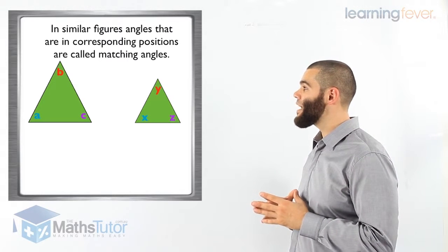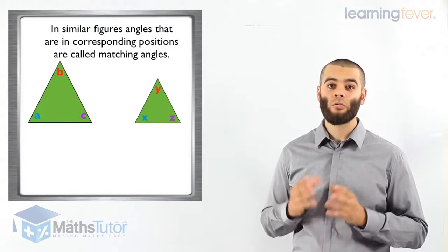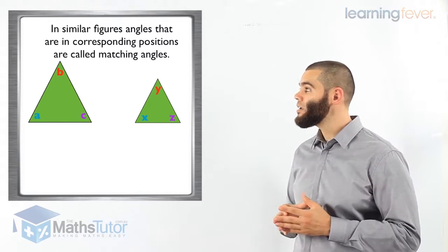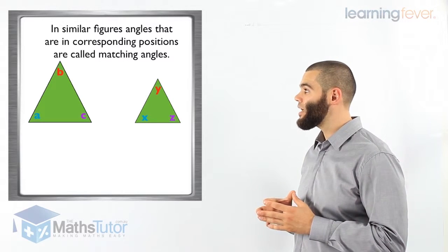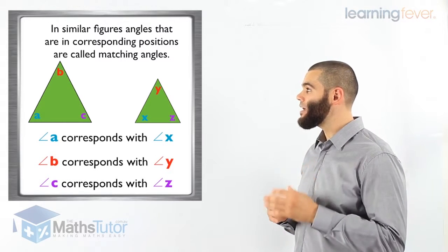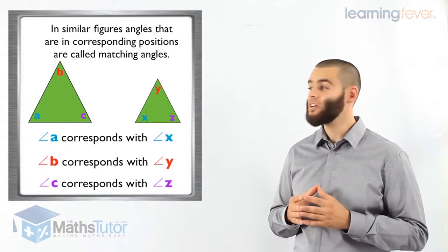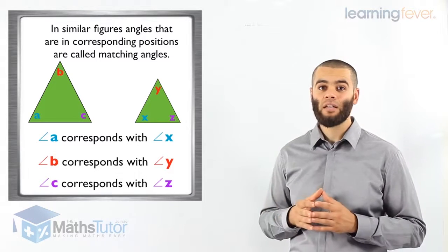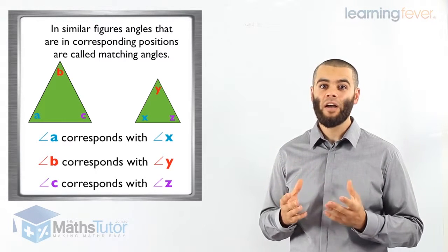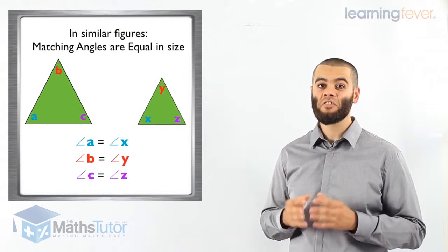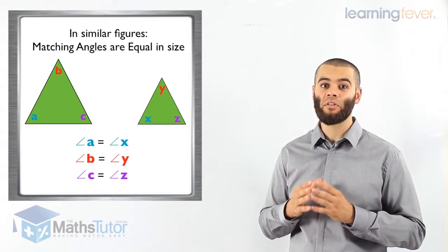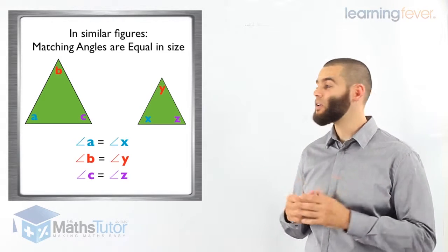When we look at angle A, angle A is in the corresponding position to angle X. Angle B is in the corresponding position of angle Y. Angle A and angle X are matching angles. Angle B and angle Y are matching angles. Angle C and angle Z are matching angles. Why? Because they are in corresponding positions.